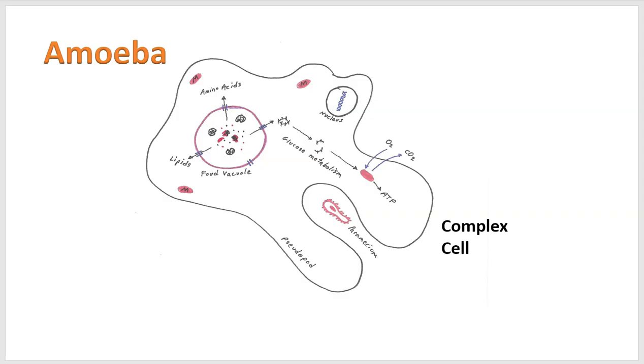So our cartoon version of a complex cell might look like this. We've got a nucleus in a complex cell and mitochondria, multiple mitochondria. And of course, complex cells are larger than the simpler bacteria type cells.